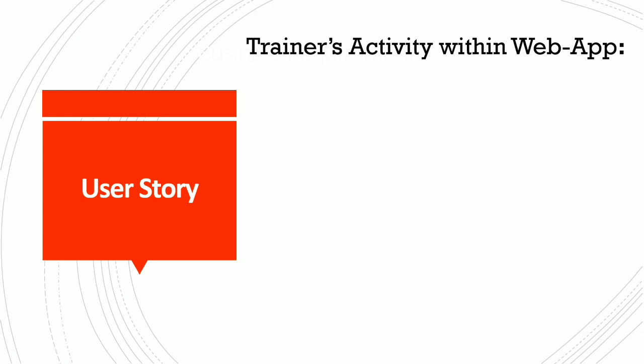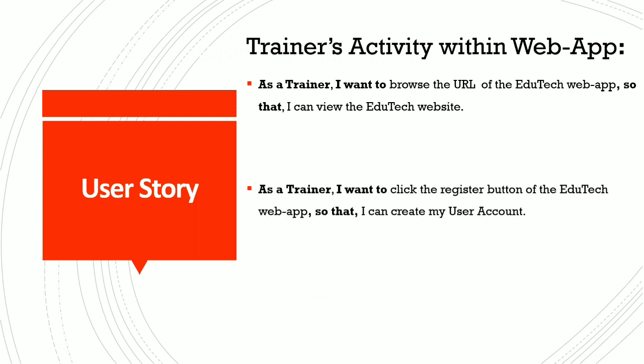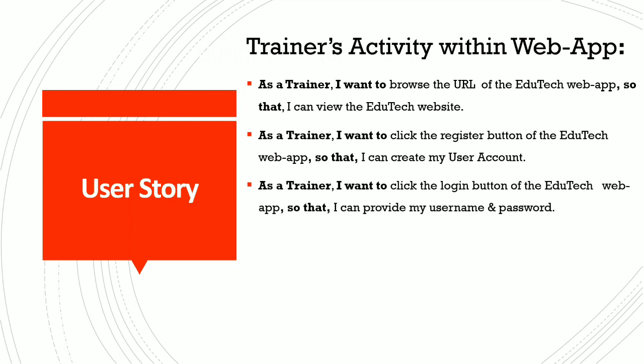Coming back to the user story, I have written five user stories for one of the requirements. The first user story is: as a trainer, I want to browse the URL of the EduTech web app so that I can view the EduTech website. The second user story is: as a trainer, I want to click the register button of the EduTech web app so that I can create my user account.